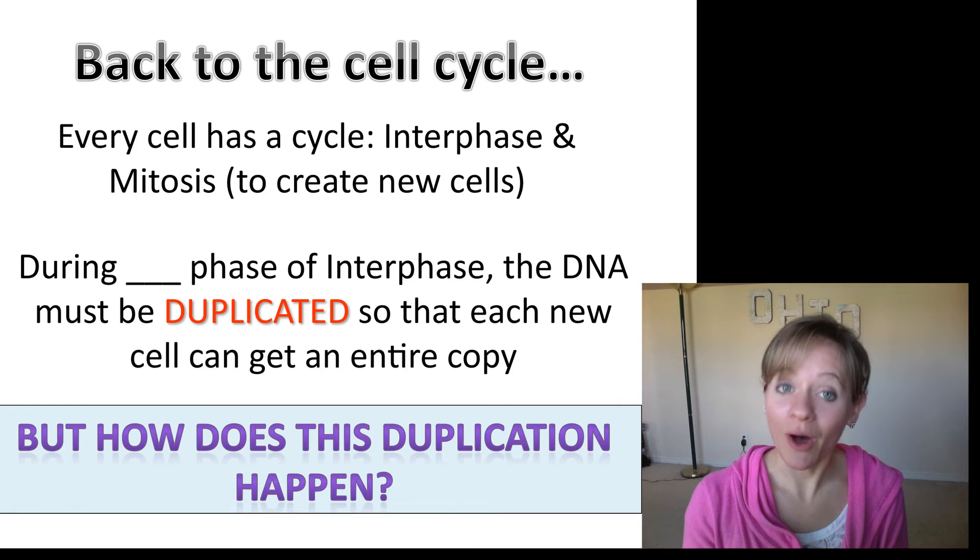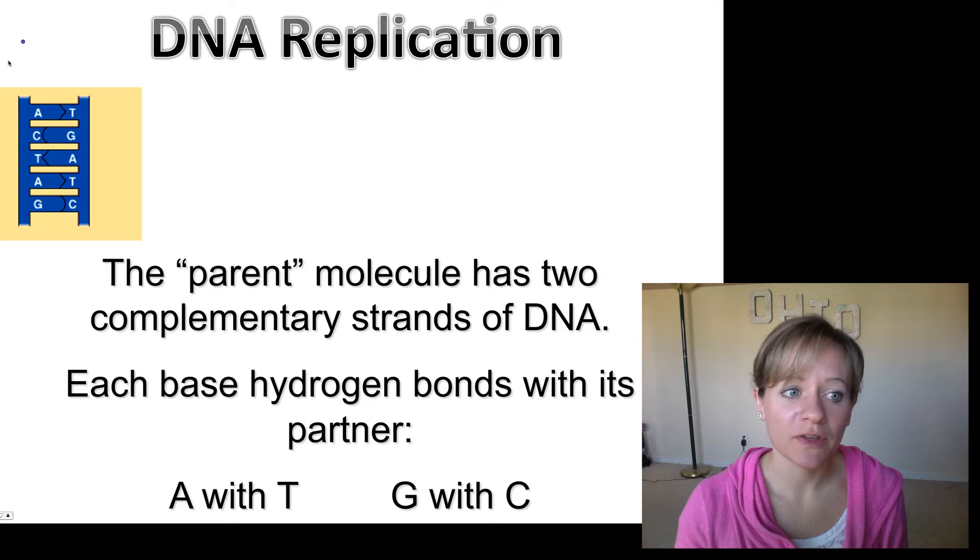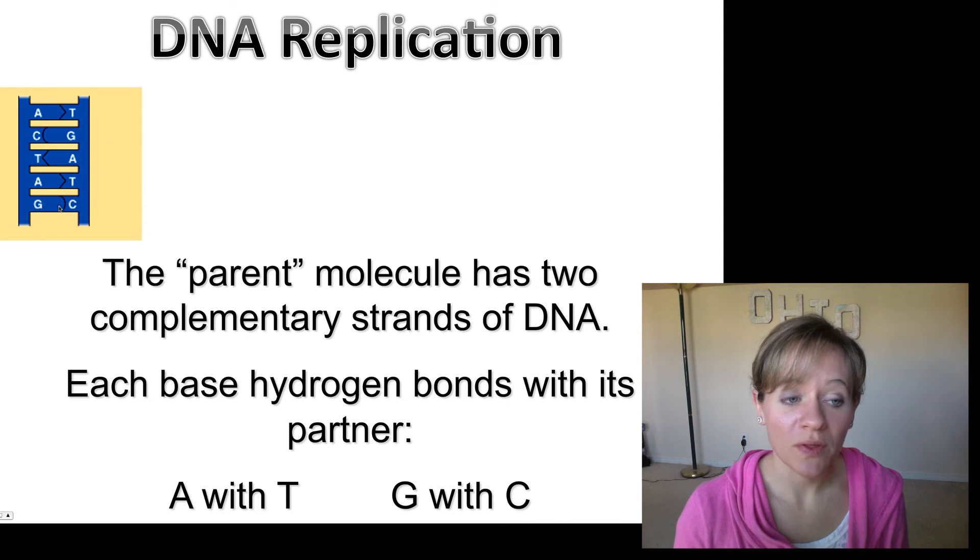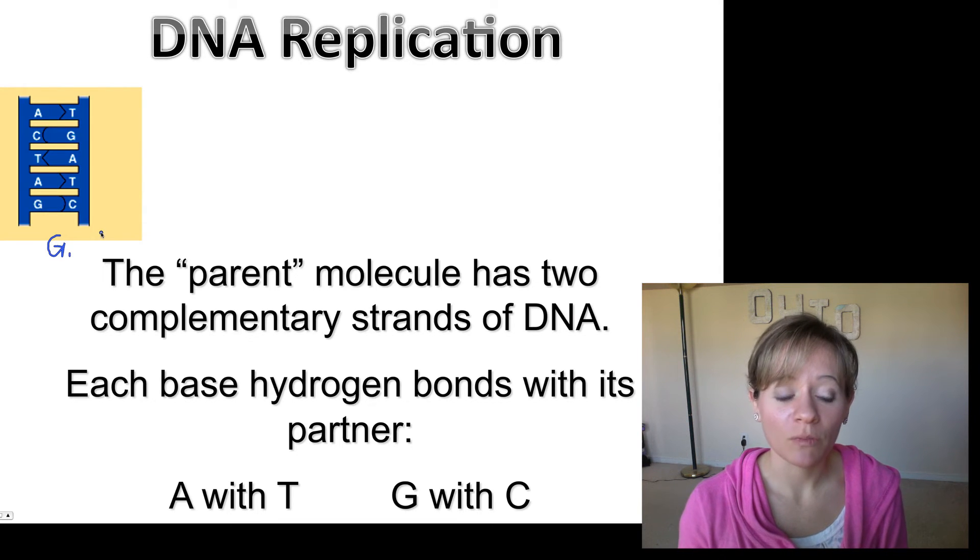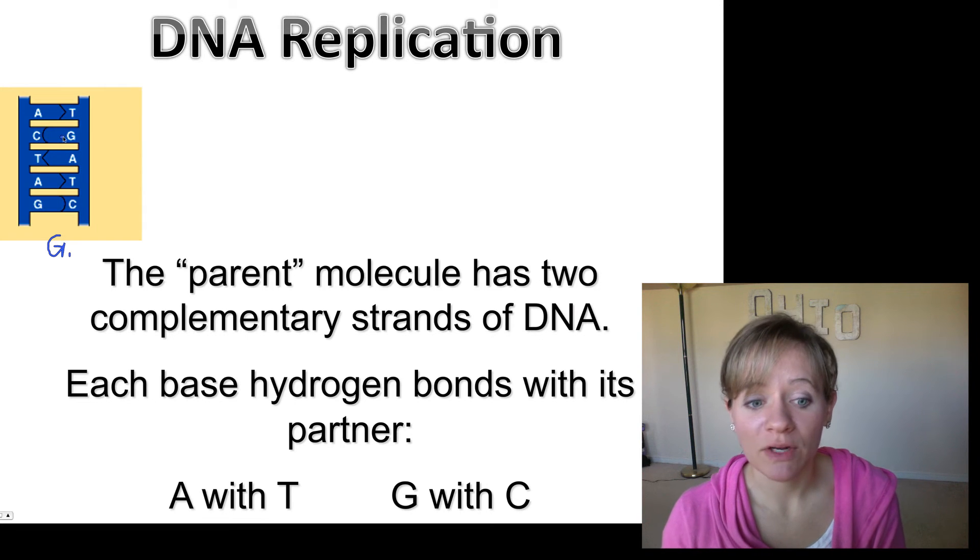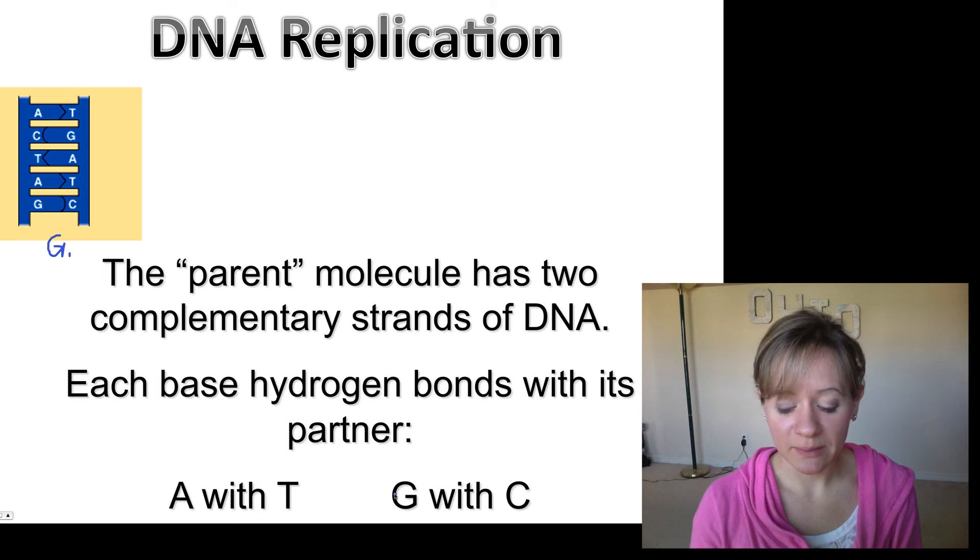So how does this actually happen? Well, I'm going to tell you. So as I go through, please draw these pictures in your notes. Label the enzymes. So what we have to start with is this is what we call our parent molecule. So this is what we see in G1 of the cell cycle, the parent molecule. And it has two complementary strands of DNA, like we just saw. A always pairs with T, C always pairs with G. That's what we mean by complementary.